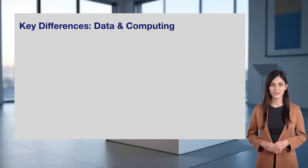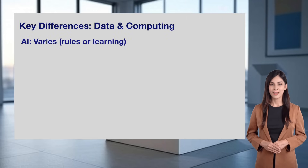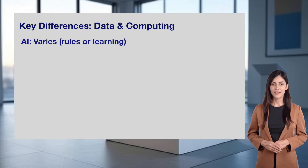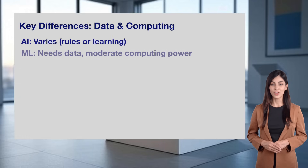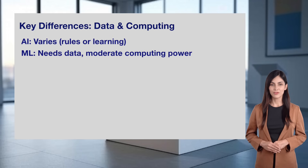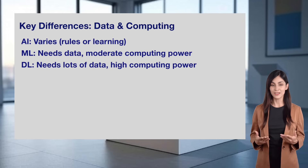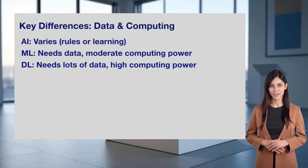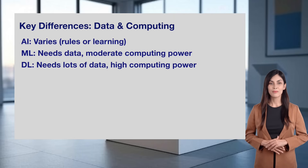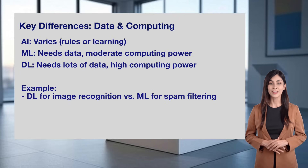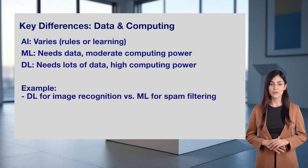Another key difference is data and computing needs. AI varies — it can use simple rules or learning, so its needs depend on the method. Machine learning needs data to learn and moderate computing power, like for spam filtering. Deep learning, however, requires lots of data and high computing power. Think of image recognition, where it processes millions of images to learn. The more advanced the technique, the more resources it demands, which is why deep learning often needs powerful machines.